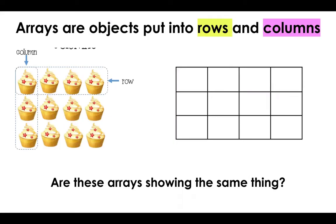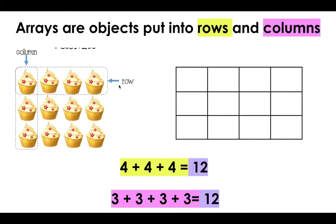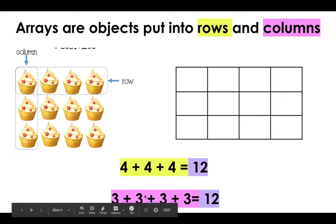Today we're going to be using boxes for arrays. When you look at these arrays, are they showing the same thing? I see that this array is cupcakes and this array is boxes, but I also see that there are three cupcakes in each column and three boxes in each column. There are four cupcakes in each row and four boxes in each row. Each of these is showing me four plus four plus four equals twelve, or three plus three plus three equals twelve. So they are showing me the same thing.